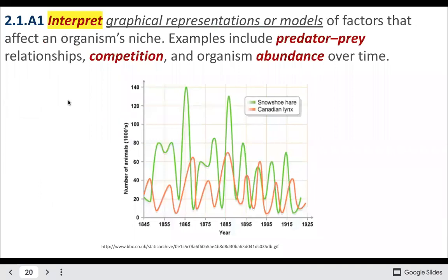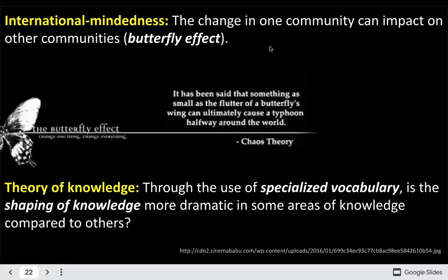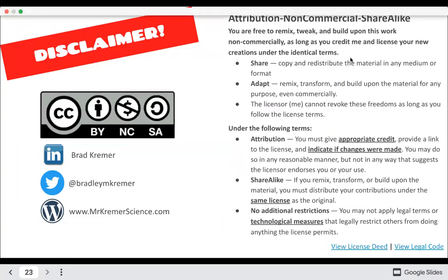For IB-style exam questions, you may be asked to interpret graphical representations — for example, how lynx respond to hare populations and vice versa. You can also see that hares have more dramatic population changes because they are more R-selected than lynx, which have fewer offspring in general. You may also be given numbers and values to integrate. Links to this slideshow can be found in the description.